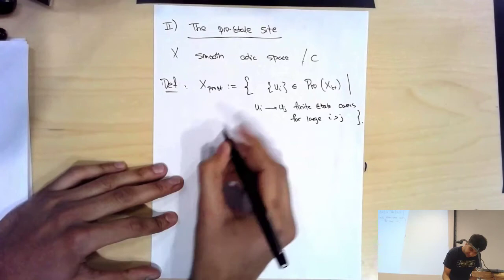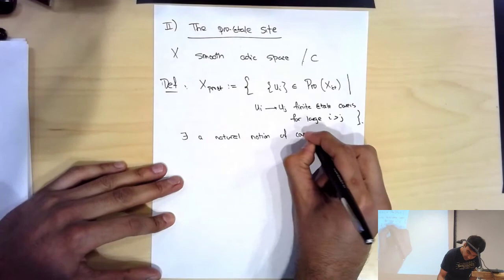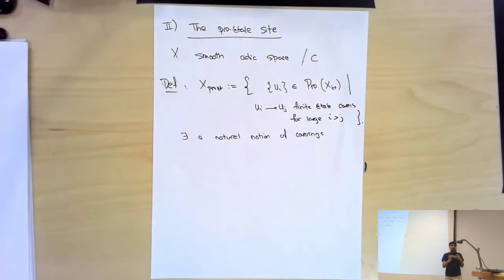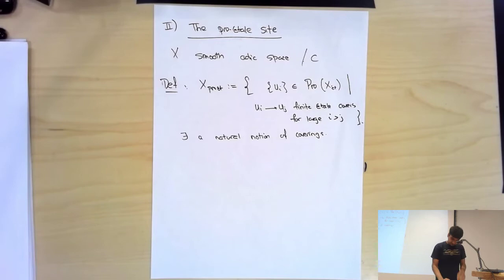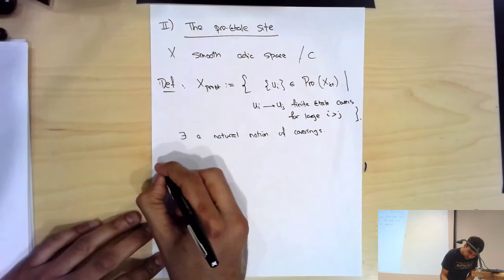It's a full subcategory, so that tells you what the morphisms are. There exists a natural notion of coverings which I won't get into — it's slightly subtle to define — and in the examples I discuss it will obviously be a covering. So it's this site which is like the étale site except you throw in towers of finite étale covers, and this will buy us something very concrete.